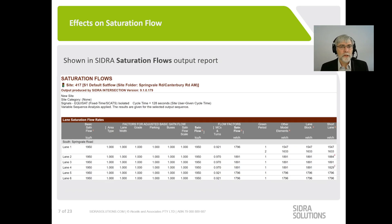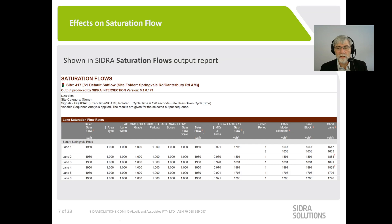In the SIDRA program there is a saturation flows output report. The basic saturation flow is in the left-hand column — 1950 through car units per hour — and that's adjusted by lane width, gradient, parking on the approach, bus stops, the turning vehicle factor, the heavy vehicle factor, other model effects such as shared lanes, opposed lanes and pedestrian interference, lane blockages from downstream, and lastly the short lane effect. The saturation flow in the last column can be quite different from the basic saturation flow you started with.